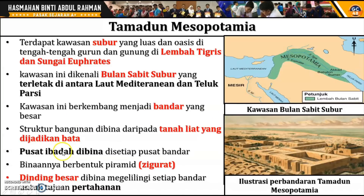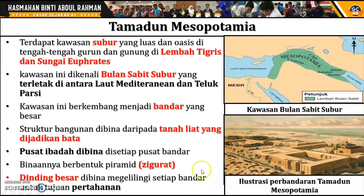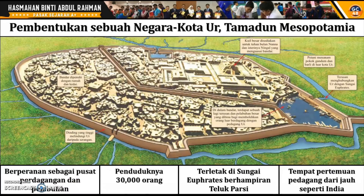Terdapat juga pusat ibadah yang dibina, dikenali sebagai Zigurat, iaitu kuil atau tempat ibadah yang ada di setiap pusat bandar. Di sekeliling negara kota pula terdapat tembok atau dinding besar yang dibina mengelilingi bandar tersebut untuk tujuan pertahanan bagi menjaga keselamatan. Itulah gambaran umum mengenai Tamadun Mesopotamia.